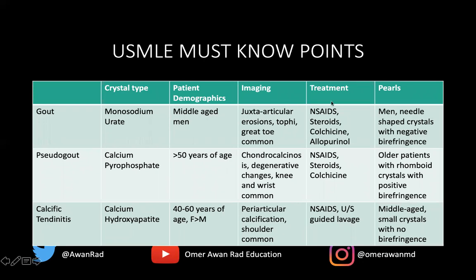We treat this with NSAIDs, steroids, colchicine; allopurinol is used more for chronic treatment of gout. The key on the USMLE is the gender — men — and needle-shaped crystals with negative birefringence under polarized light.